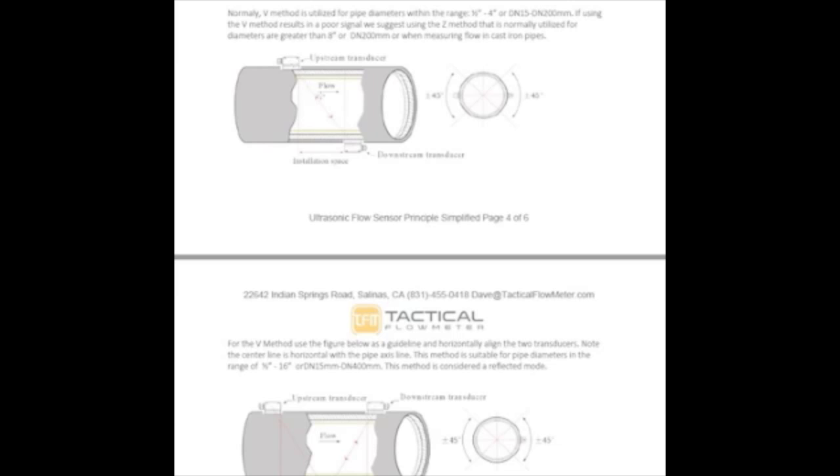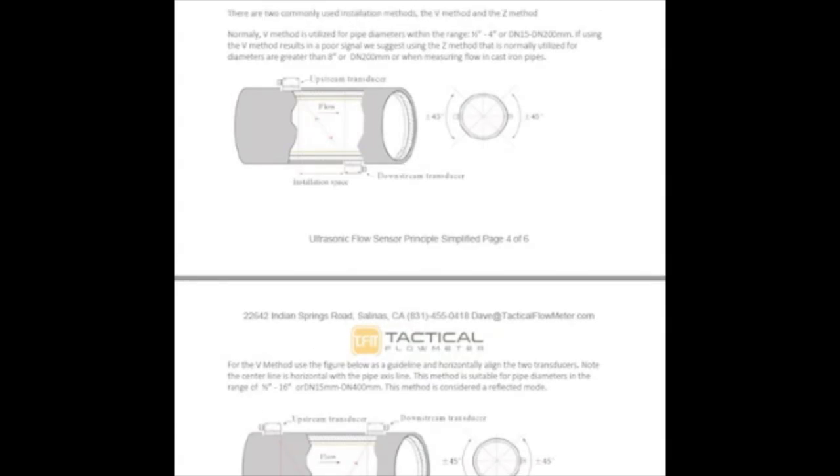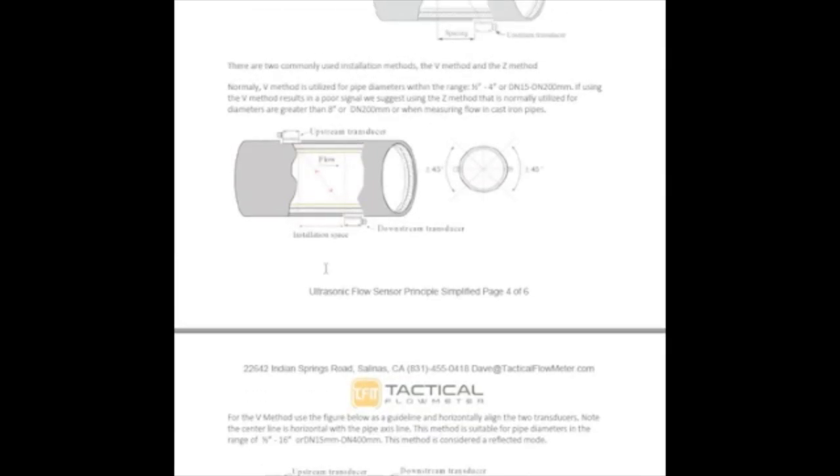One is directly from one sensor to the other, and another one is from one sensor bouncing off the wall, just like a billiard ball, equal angle, will bounce off to the downstream sensor. This is the 50,000-foot view how these things work.